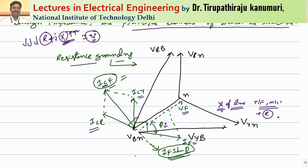The combination r + jx decides the value of angle phi, which will always be less than 90 degrees. Some component of IF — equal to IF sin phi — will be 90 degrees lagging behind the voltage, opposing the capacitor currents. If IF sin phi exactly equals ICF, the resultant currents become zero, cancelling the capacitor currents and completely eliminating the phenomenon of arcing grounds.